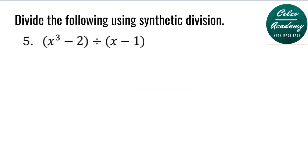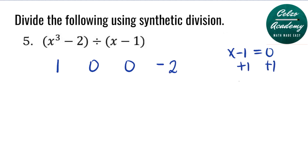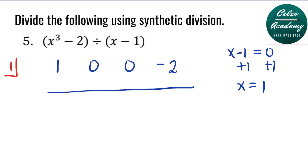Question number 5: x cubed minus 2, divided by x minus 1. Our dividend has missing terms: x squared and x to the first. The coefficient of x cubed is 1, we're missing x squared, we're missing x to the first, and then we have the constant negative 2. Our value indicator is 1, because by using x minus 1 equals 0, we add 1 to both sides. Our x value is equal to 1. So our value indicator is positive 1.